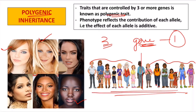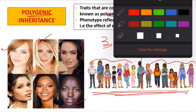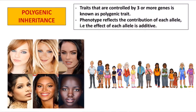The phenotype — the physical appearance — looks different because of the contribution of each allele. How many dominant alleles are present and how many recessive alleles are present determines different phenotypes. This effect is called the additive effect, because the phenotypic expression depends on how many dominant alleles are present in the genotype. Let us take an example of skin color to understand polygenic inheritance.